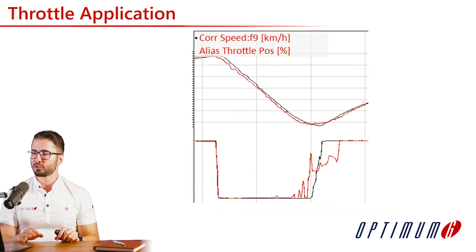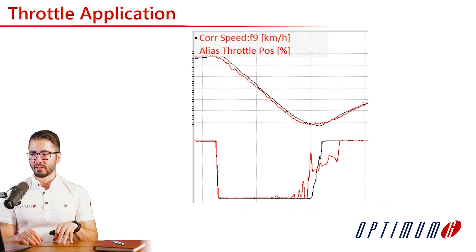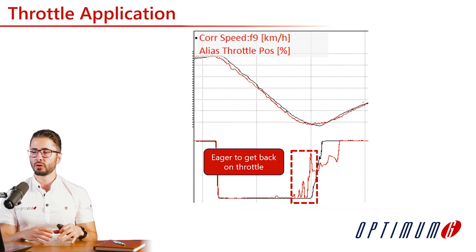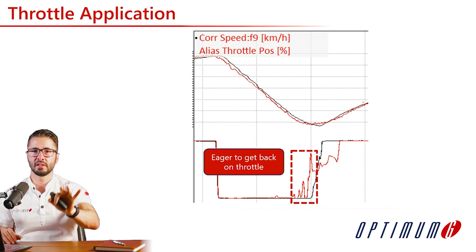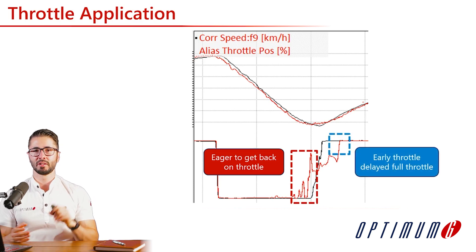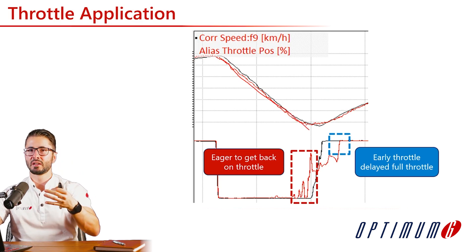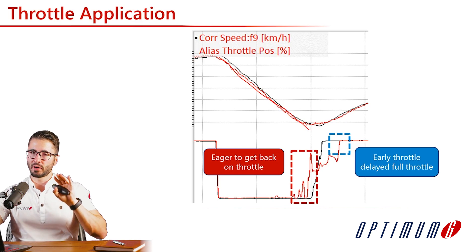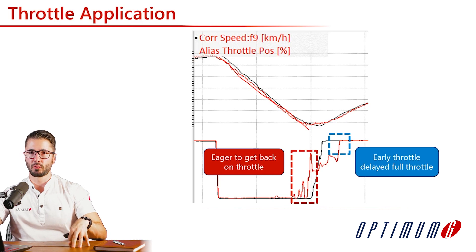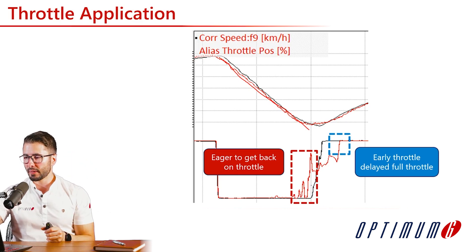Looking at real data — reference lap in black, comparison lap in red, with speed and throttle traces. We can see the comparison driver in red trying to go back on the throttle dozens of meters earlier, searching for the pickup point. Even so, he never goes to full throttle and takes a long time to get there. He's carrying less speed in the braking zone and tries to compensate with early throttle, but this induces understeer — causing him to lift before he can go full throttle, losing a lot of time at corner exit.